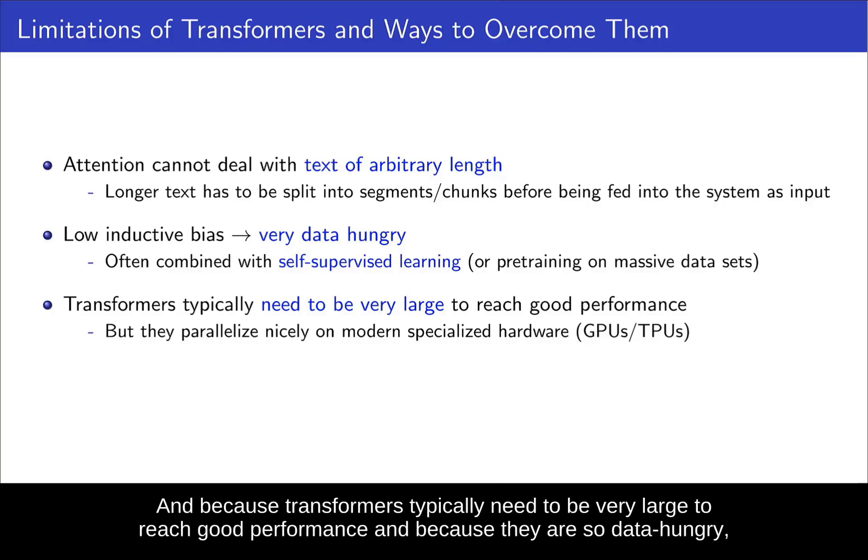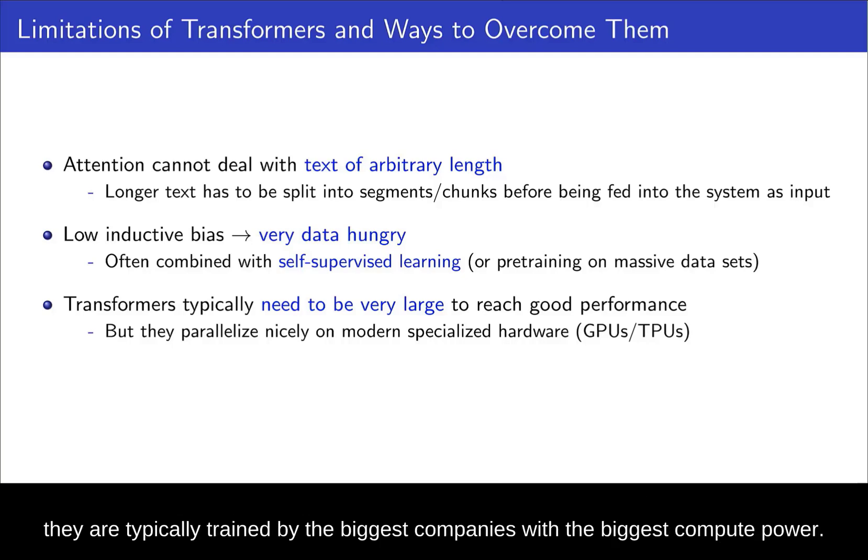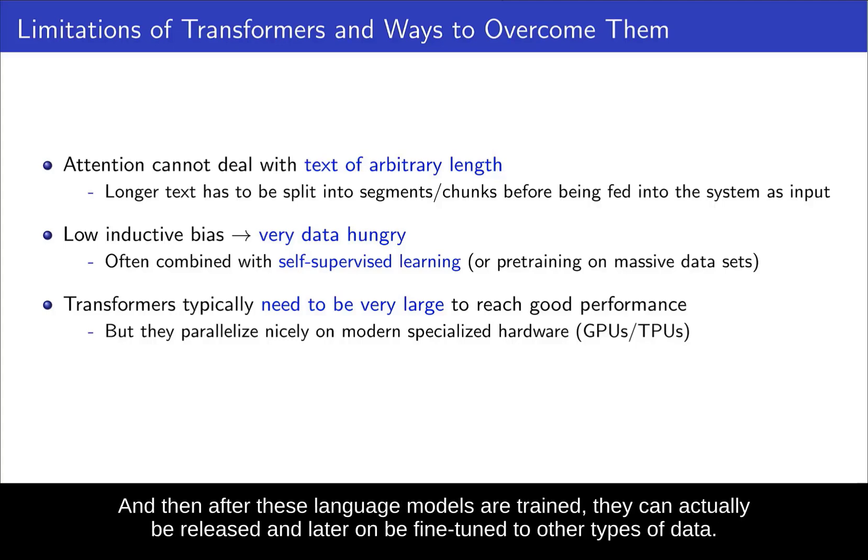And because transformers typically need to be very large to reach good performance and because they are so data hungry, they're typically trained by the biggest companies with the biggest compute power. So for example, Google and OpenAI have trained the largest language models. And then after these language models are trained, they can actually be released and later on be fine-tuned to other types of data.